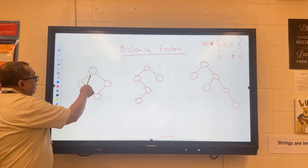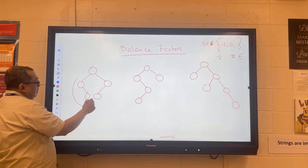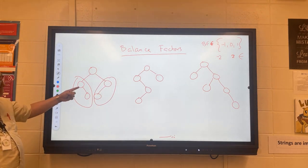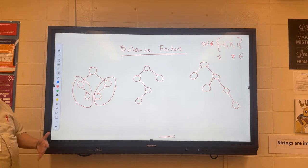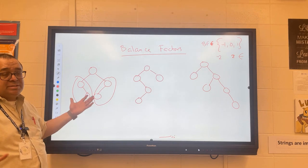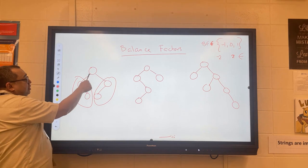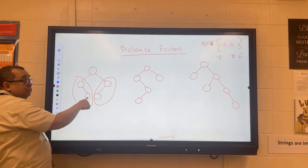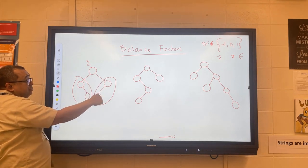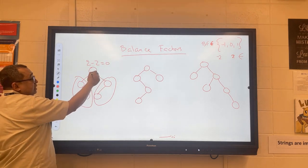Let's look at the height of a specific node. There's a subtree on the left and another subtree on the right. When I calculate the height of the left, I count the edges: 1, 2 — that's 2. When I calculate the height of the right, I go 1, 2 — that's also 2. So the balance factor for this node is 0.